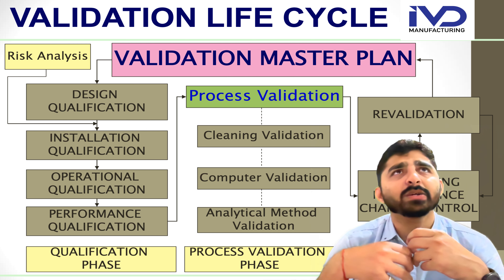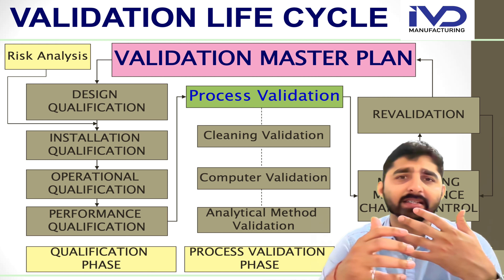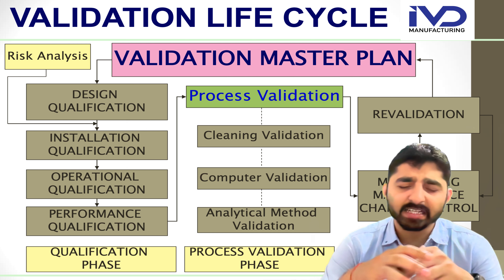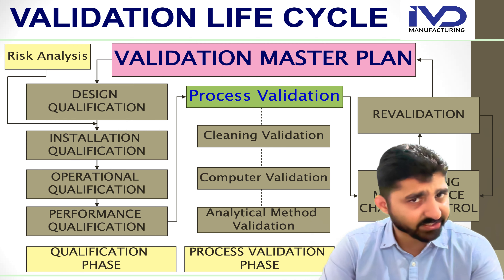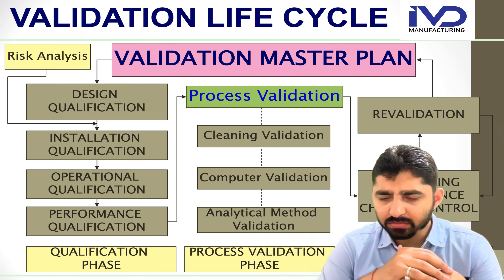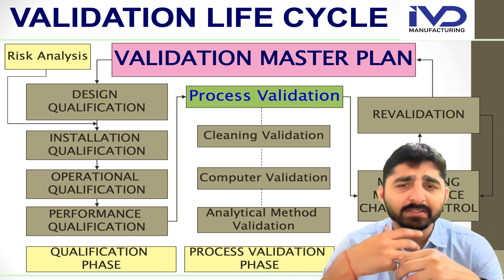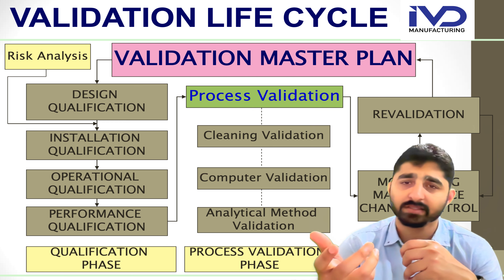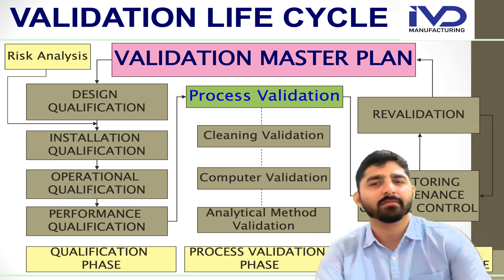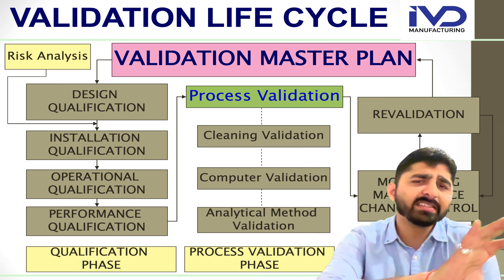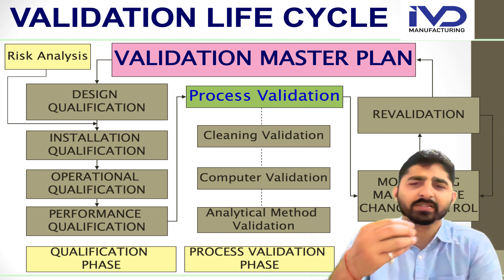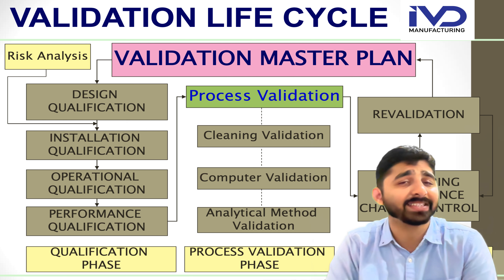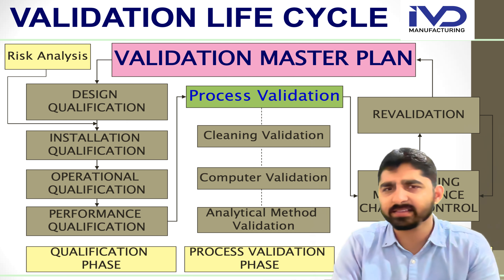For example, if I have a clean room and I am maintaining ISO Class 8 for manufacturing a particular product, I need to revalidate my clean room after 6 months or 12 months, depending on usage and criticality. This is called revalidation. The entire process — qualification, process validation, and maintenance phases — must be monitored and governed by the change control systems.